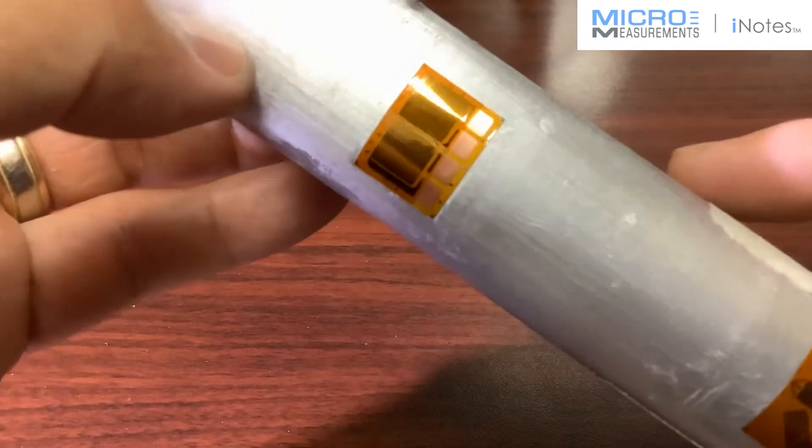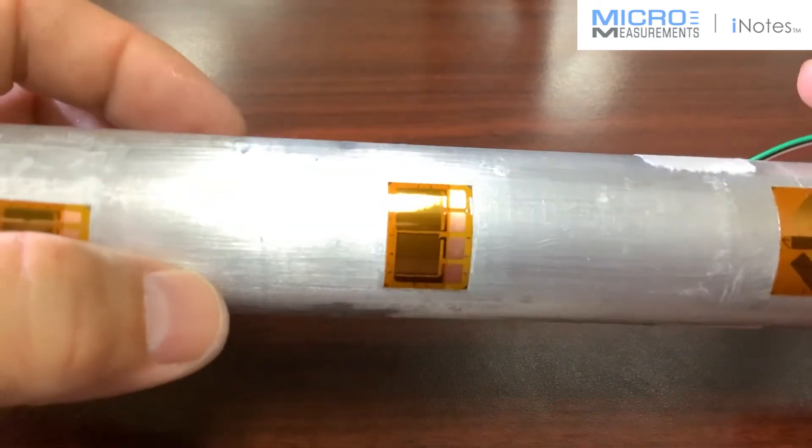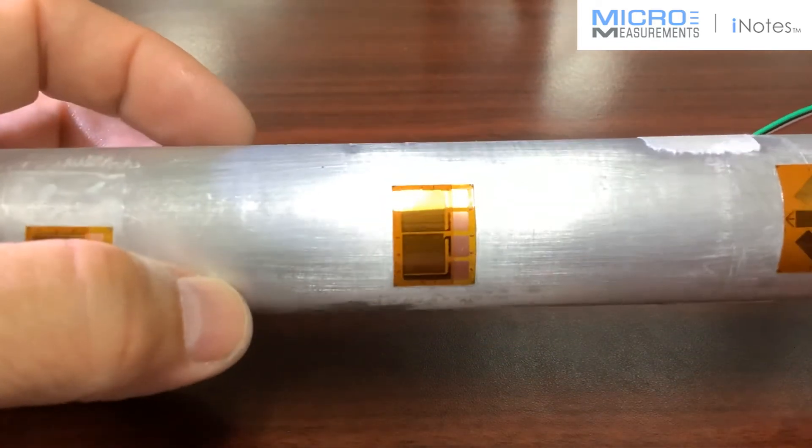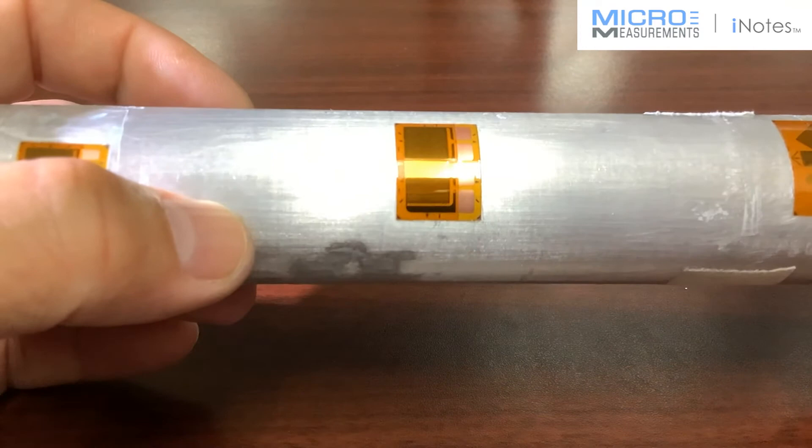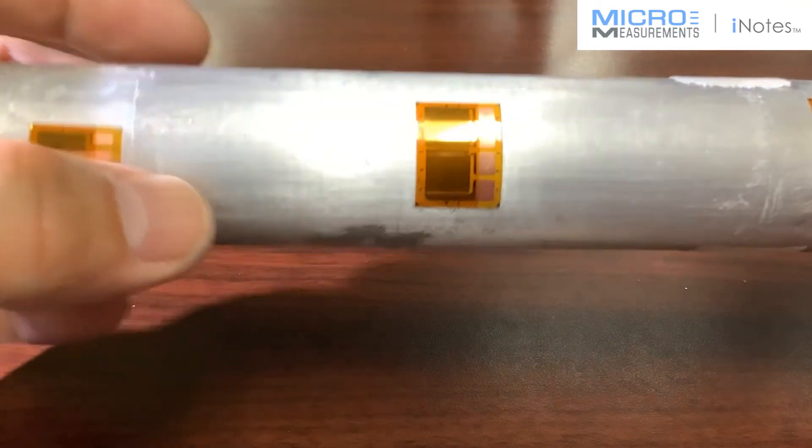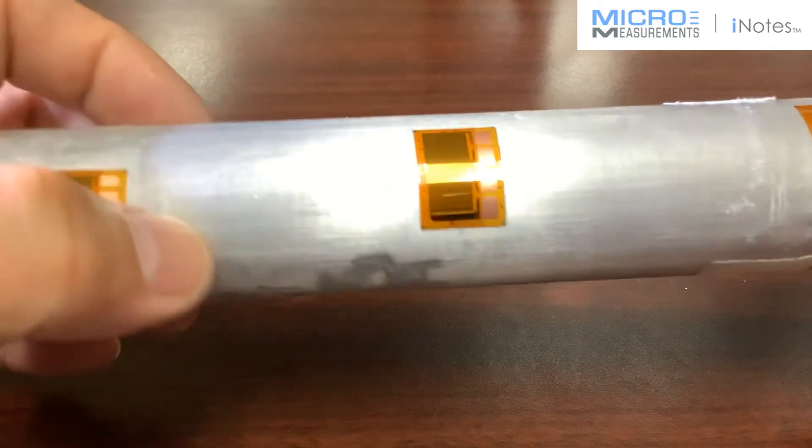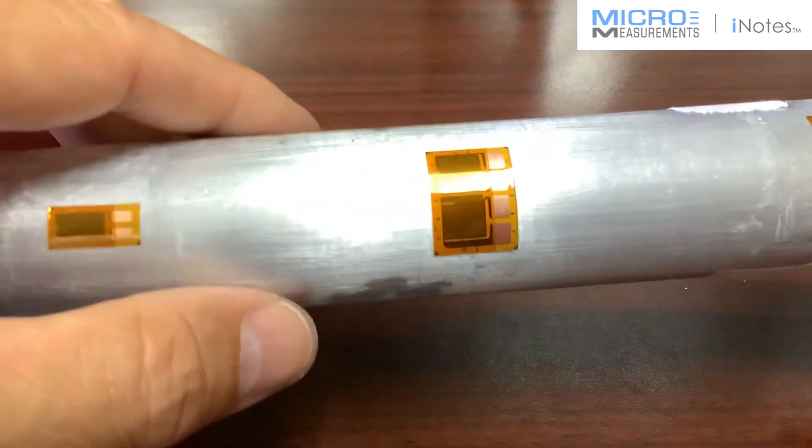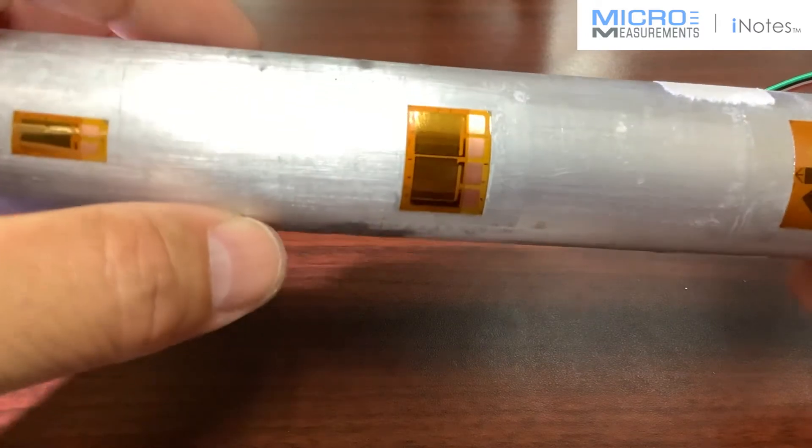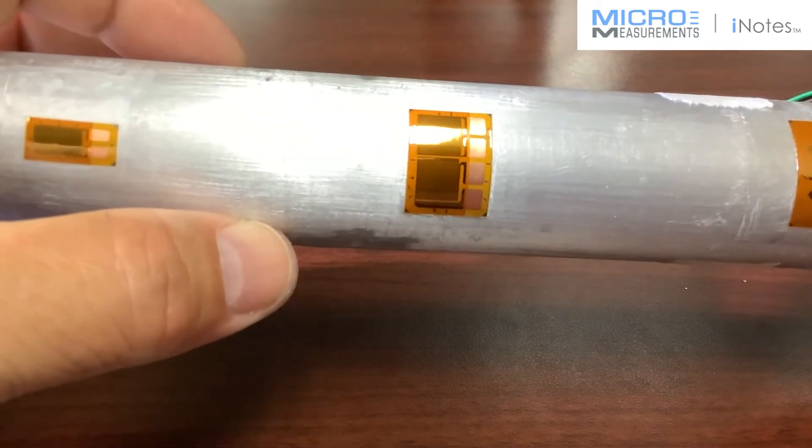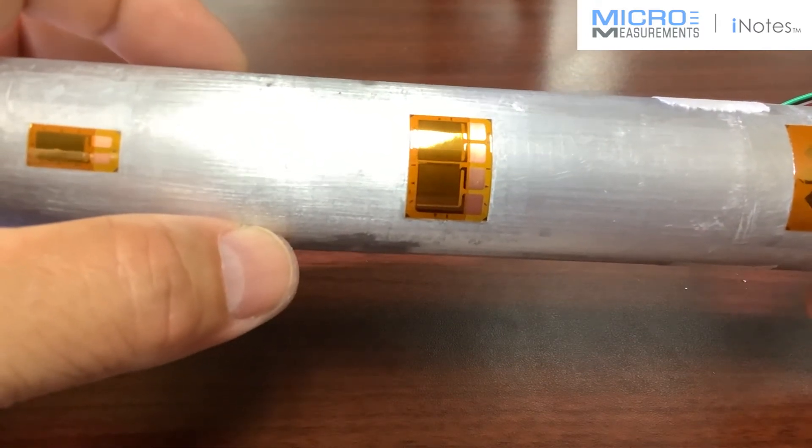So again, just to summarize, this is a two element T-rosette, sort of you're getting two for one. You bond one strain gauge and it's got two sensitive grids on it. It's a CEA series construction. So again, you can see the large copper coated tabs and you'll see the film overlay over the gauges to protect it while it's being installed. And this is intended to be a drop in replacement for the traditional 250 UT pattern.